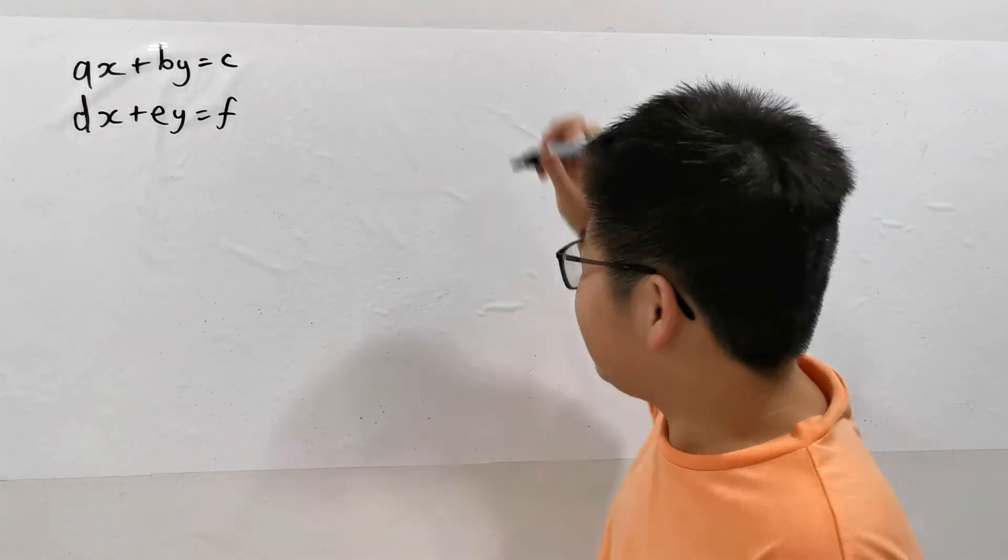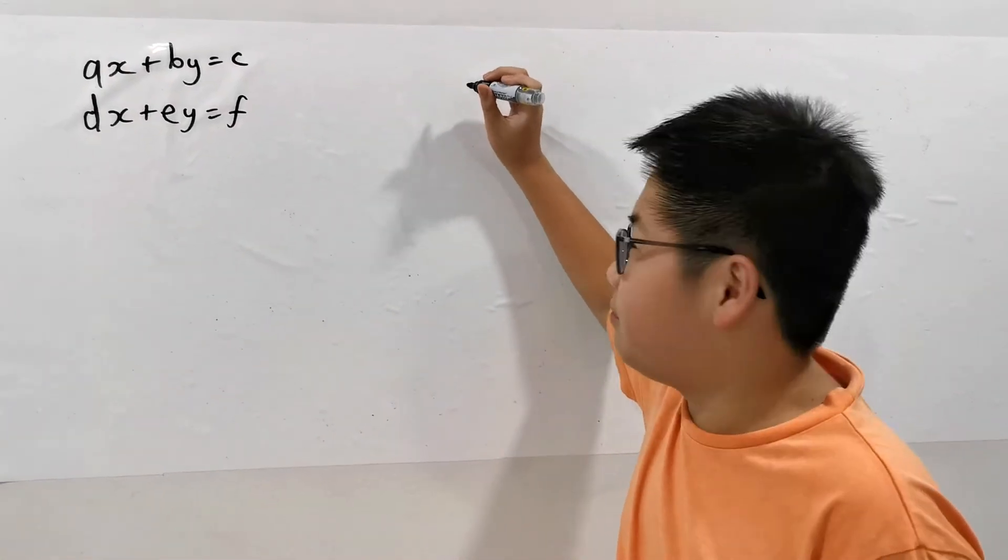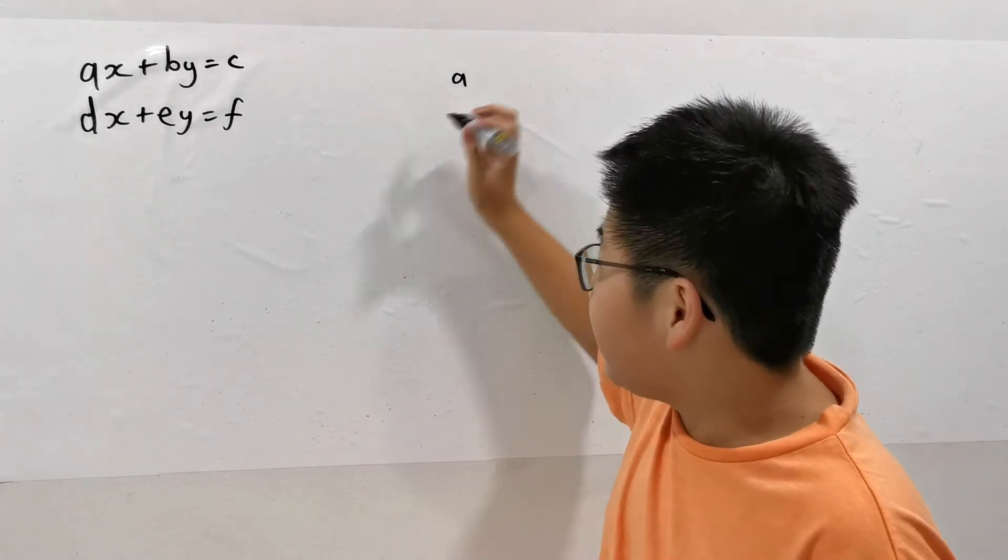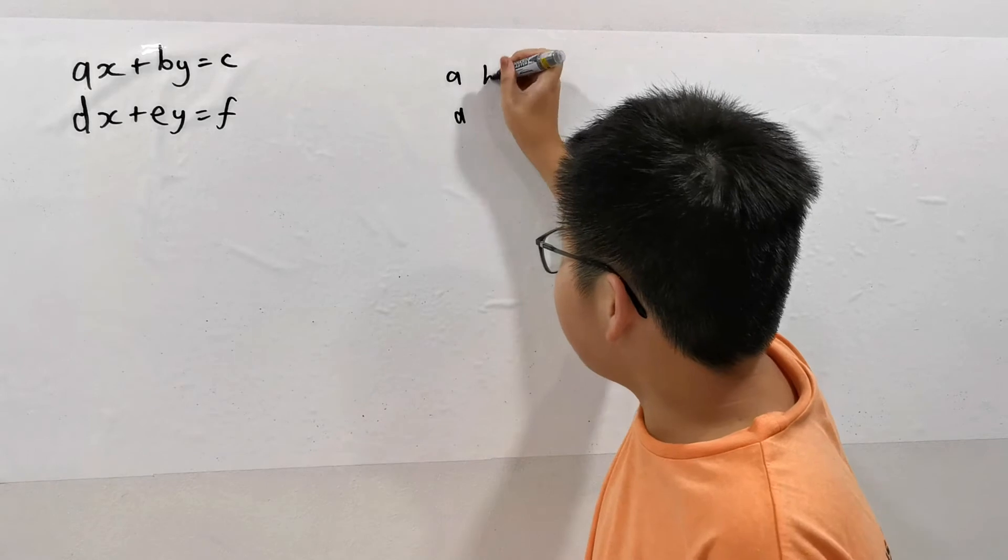You know what's called shoelace? Because it's related to the shoelace method for doing polygon areas. So first we have to put this coefficient by this coefficient: A, D, B, E.